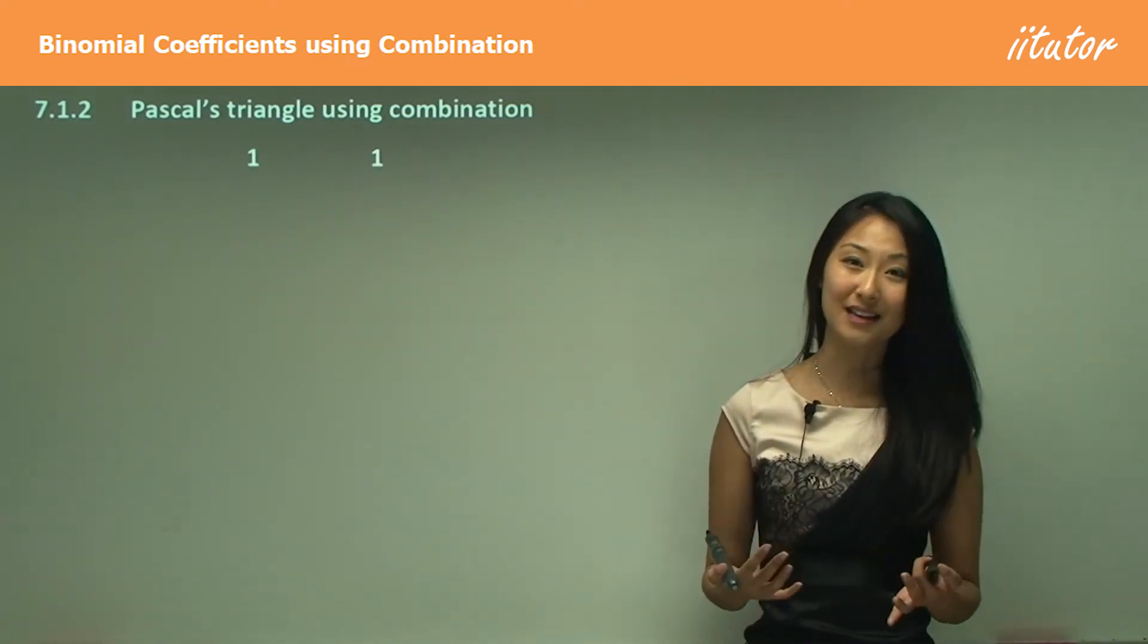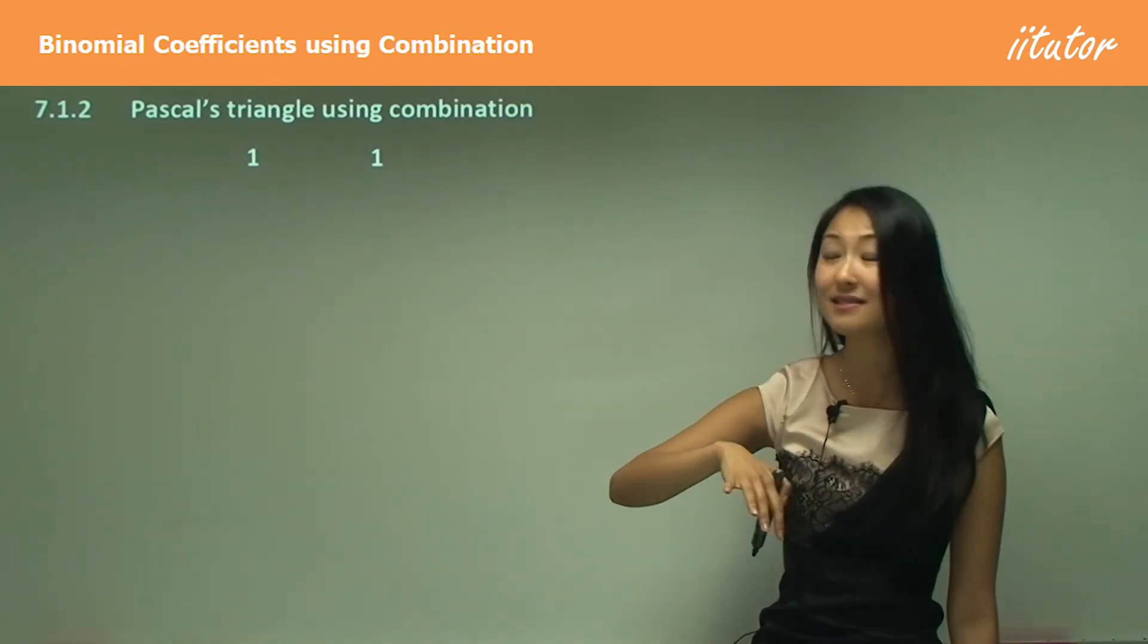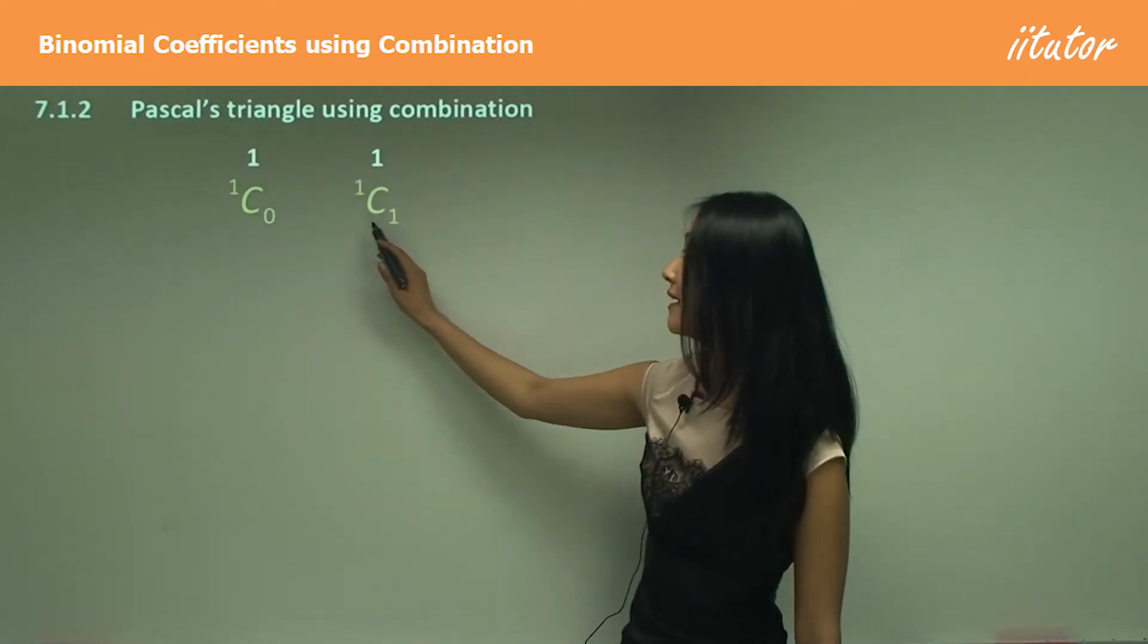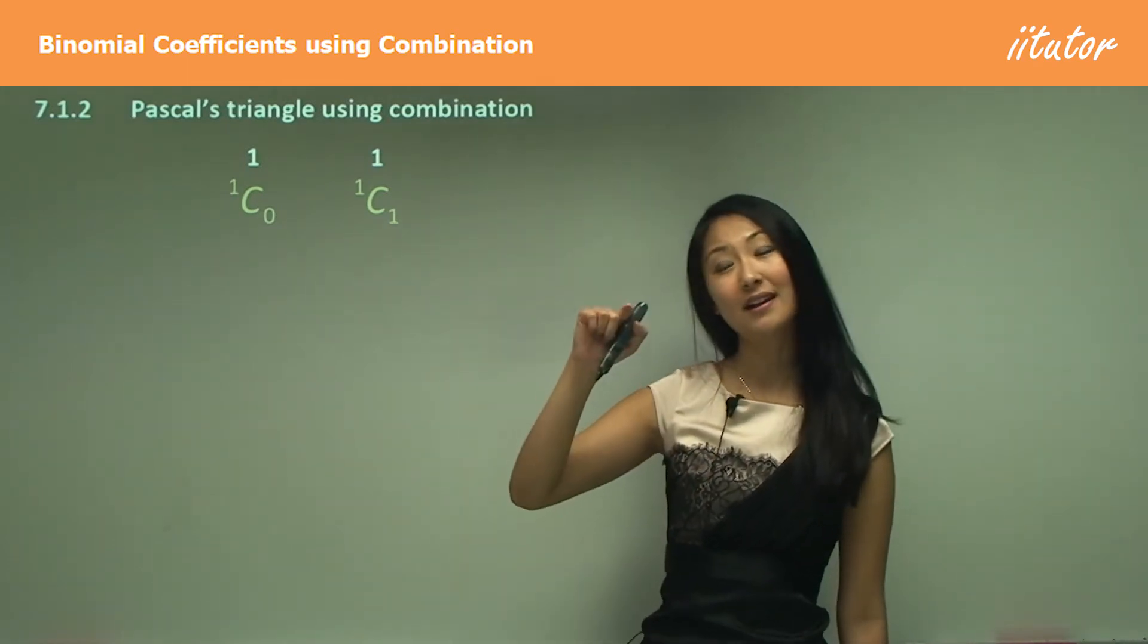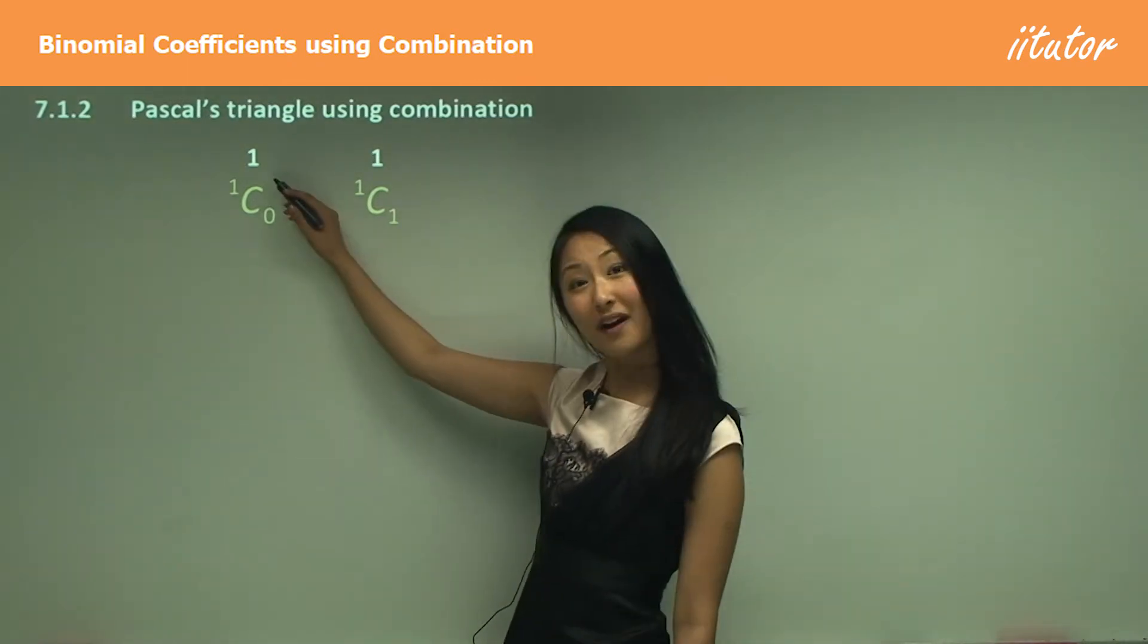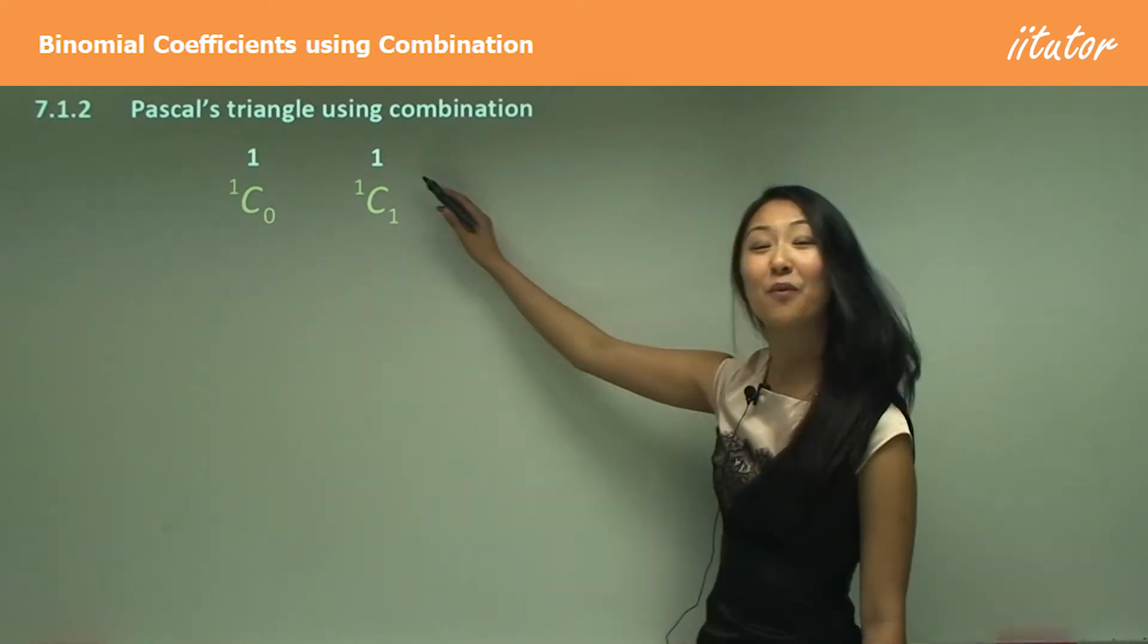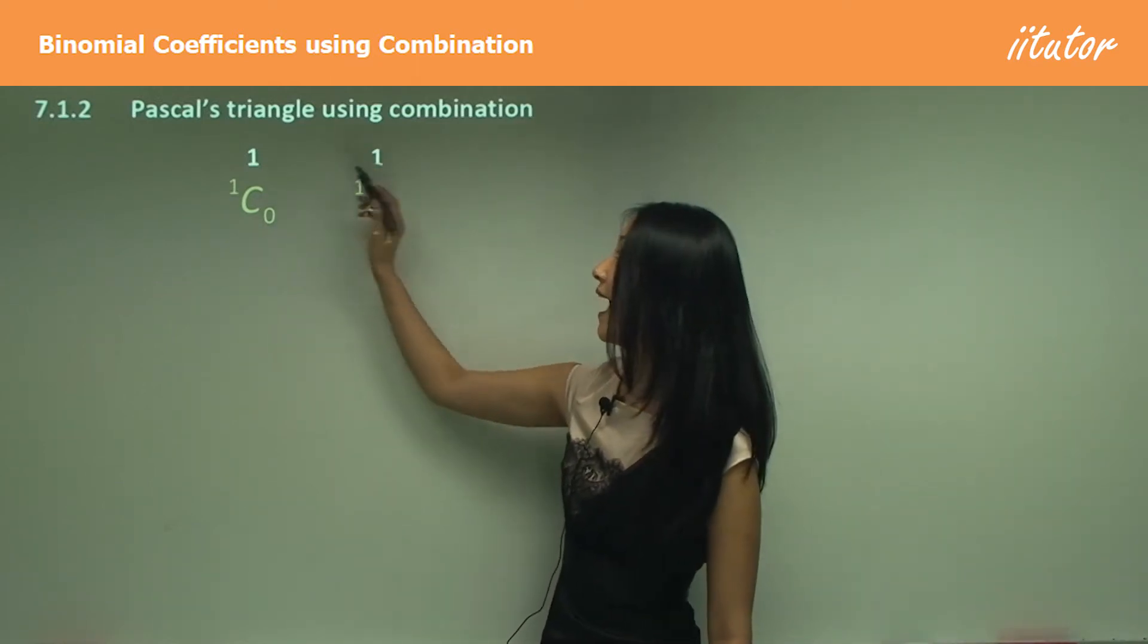So we know that Pascal's triangle starts off with one, one, and we can actually use combinations to work out these numbers. So one and one can be worked out by having 1C0 and 1C1. So let's just practice putting that into your calculators. You just need to press one and you'll have a little C button, so shift that and zero. And do you get one? Good. Great. Now let's practice with this one. So put in 1C1 in your calculator and you get one as well, don't you?